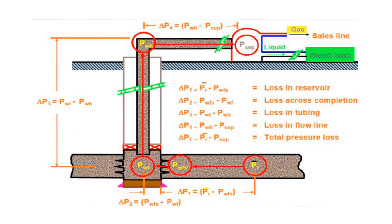There must be a pressure gradient that gives us that allowance for the hydrocarbon to move from the reservoir into the wellbore, because hydrocarbon always moves in the direction of lower pressure. If there is no pressure gradient, hydrocarbon cannot move. We have a series of pressure losses as the hydrocarbon flows from the reservoir to the borehole and to the wellhead: delta P1 is the difference between reservoir pressure and sand face pressure; delta P2 is sand face pressure minus bottom hole pressure; delta P3 is bottom hole flowing pressure minus wellhead pressure.